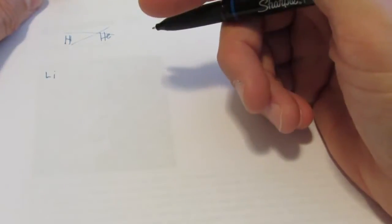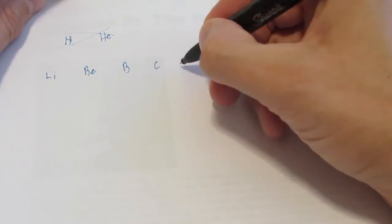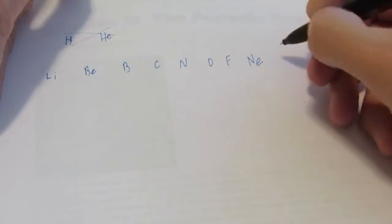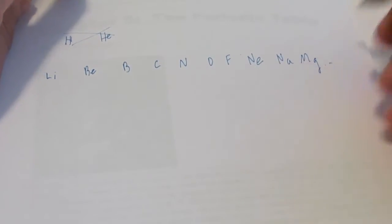We're going to ignore those two just for the sake of explaining this a little bit easier. We're going to start with lithium, which is the third heaviest element, then beryllium, then boron, carbon, nitrogen, oxygen, fluorine, neon, then sodium, magnesium, etc.